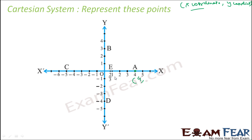The y-coordinate is the distance along the y-axis. We draw a line parallel to the y-axis and find the distance from the x-axis. Since this point is on the x-axis, that distance is 0. So the point is 4 comma 0.